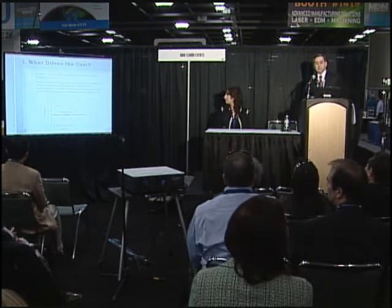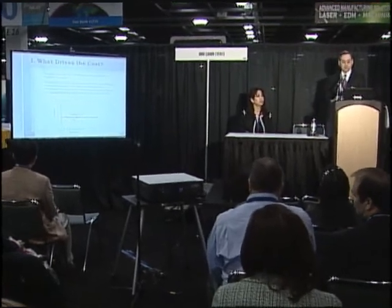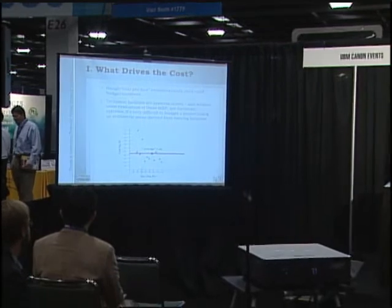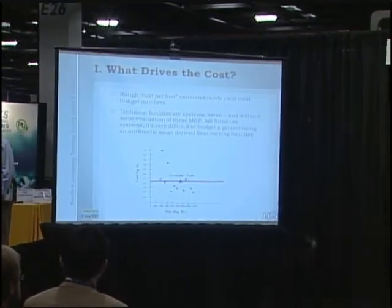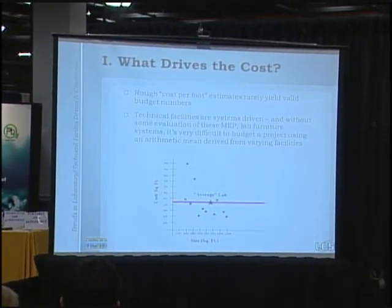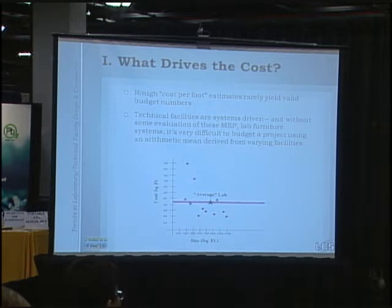We did a white paper several years ago. Someone will always ask, what's the average cost of a lab? We did a scatter chart and came up with cost per square foot. If you compute the standard deviation from the various cost-per-foot figures, the arithmetic mean is somewhat meaningless. It's very important to get a team together who can understand what drives cost on the MEP systems — without that, it's very difficult to determine your estimated budget.